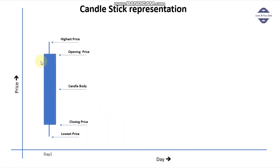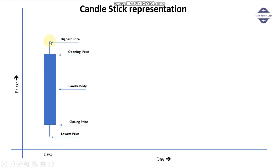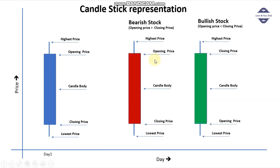The candlestick representation looks like this. For a particular day, this is the candle — this is the body of the candle, and there are wicks on the top and bottom. The top wick represents the highest price. The body starts at the opening price and ends at the closing price. The bottom wick represents the lowest price. So this whole candle represents the four important data points in a single adjustable line, which is very helpful.